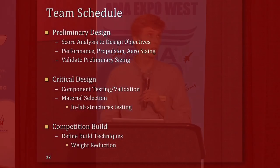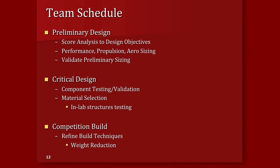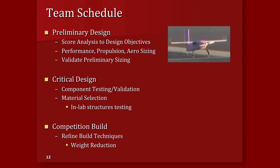These planes don't come together overnight. We divide our year into three primary cycles. The first is our preliminary design cycle: we take the scoring and rules released each year, set design objectives using score analysis, do preliminary sizing for performance, propulsion, and aerodynamics, and then validate that preliminary sizing using crude scratch-built foam aircraft to test the initial design.